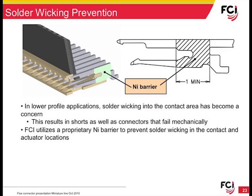As connectors continue to be developed with smaller pitches and lower profiles, issues regarding board processing become more prevalent. Lower profile connectors have a much higher risk of solder wicking beyond the tails and up into the mating interface, creating short circuits and in some cases rendering the connector mechanically unusable. To address this concern, FCI employs a proprietary process which places a barrier of nickel between the solder tails and the interior of the connector, preventing solder from wicking and depositing where it can create quality problems and the need for rework.